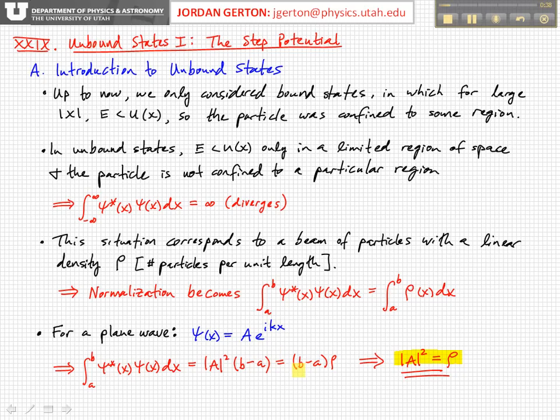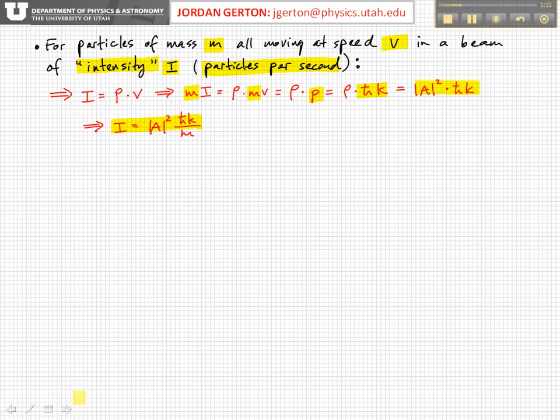And we know that equals (b - a) times the density. Since the density is defined as the number of particles per unit length, we identify the amplitude coefficient A²—remember A can be complex, so when I say A² that's A* times A—we identify that with the density, or the number of particles per unit length.